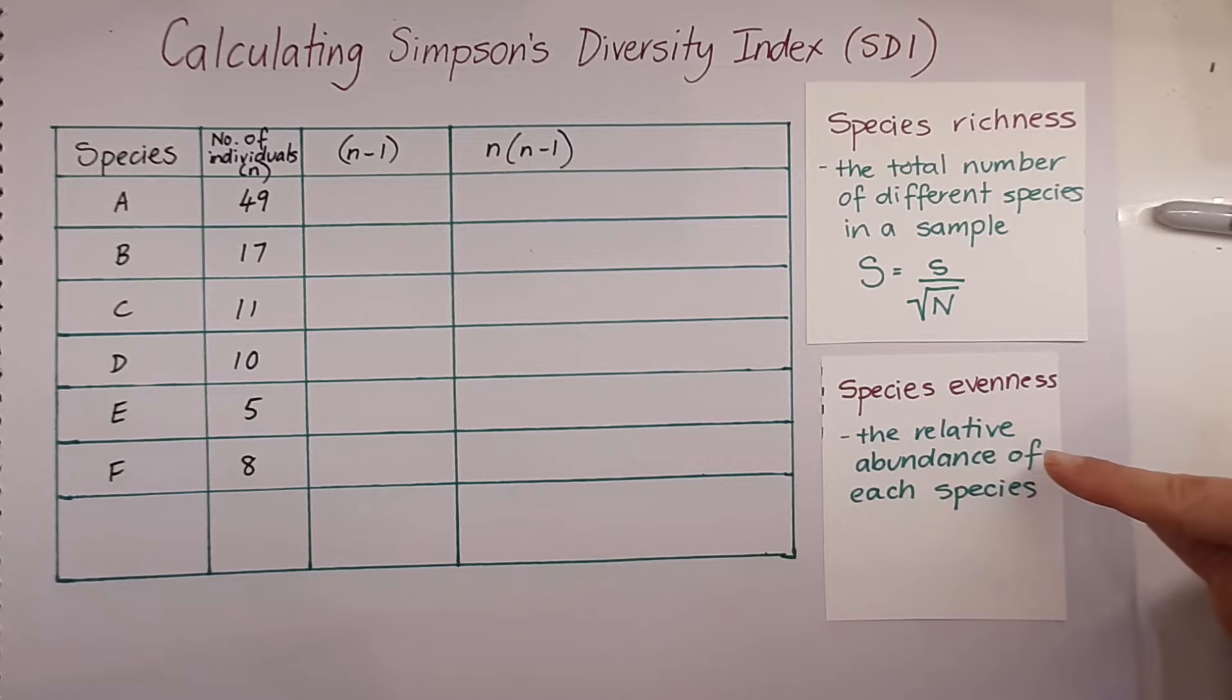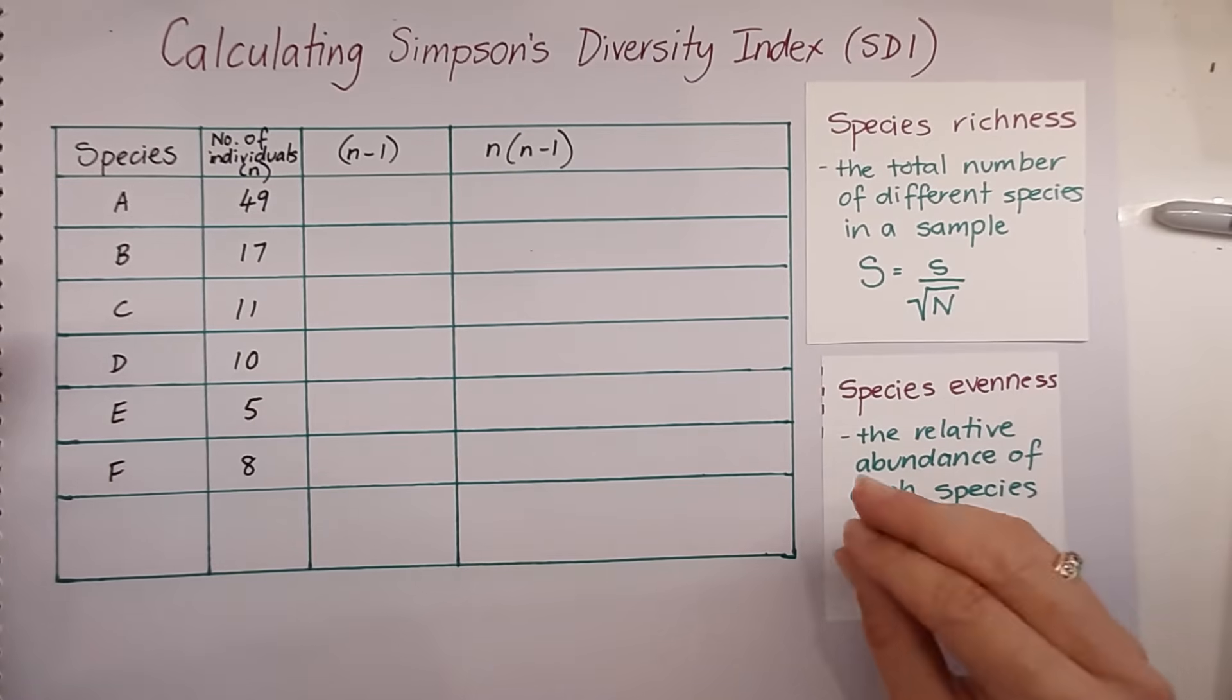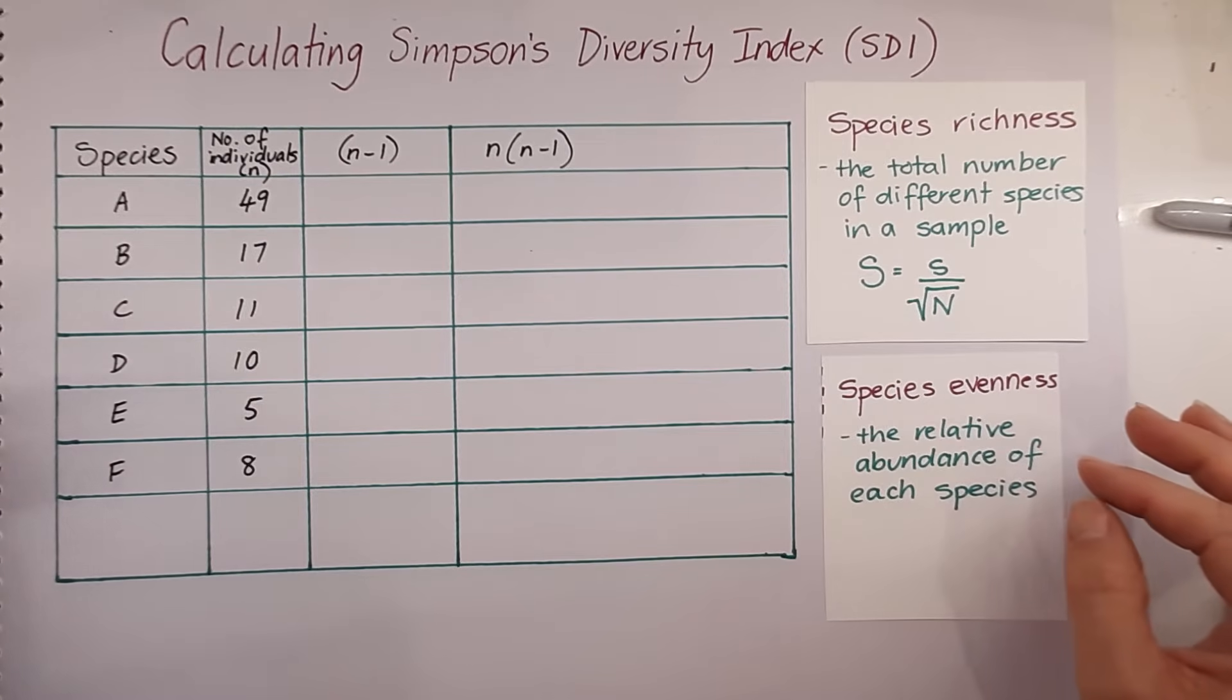Species evenness, in contrast, is the relative abundance of each species in a sample. So it tells us if there's an approximately even number of individuals of each species, or if there's one species that's really dominating, then species evenness would be very low.